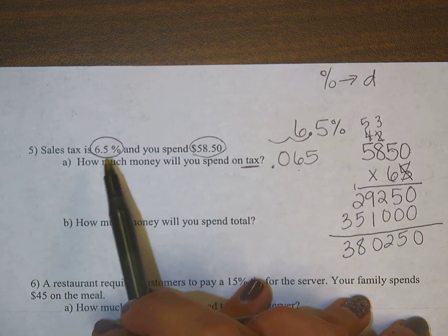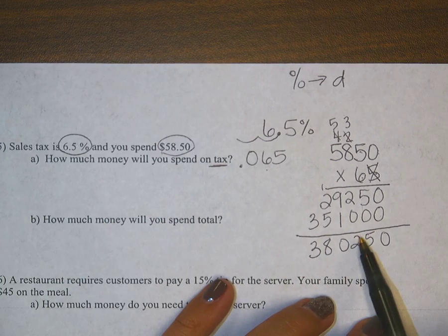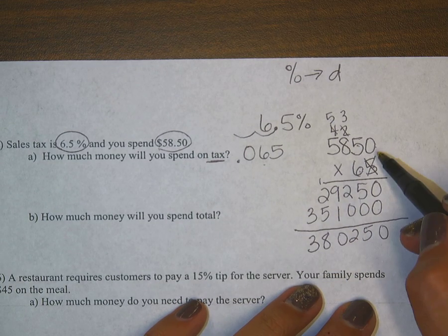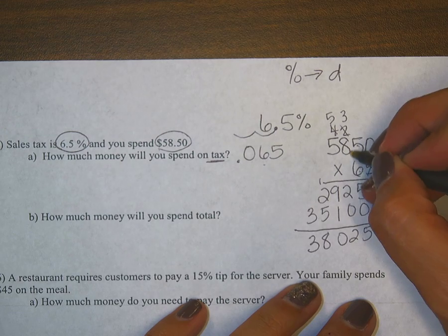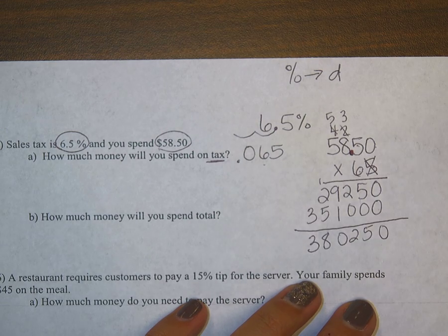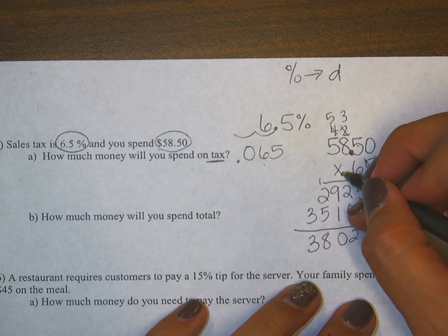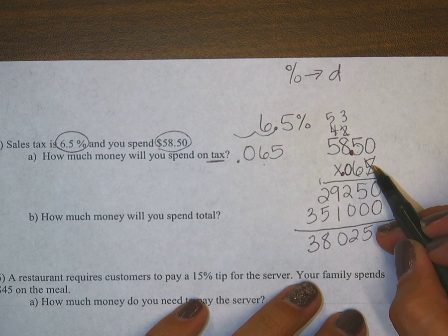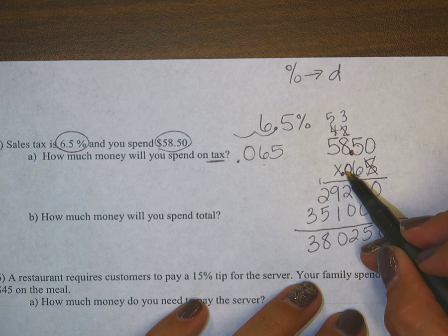And I already know because this is a small percent, I am going to get a smaller money value. Put these decimals back in: one goes there and one goes here. Put that zero. So 1, 2, 3, 4, 5 decimal places.